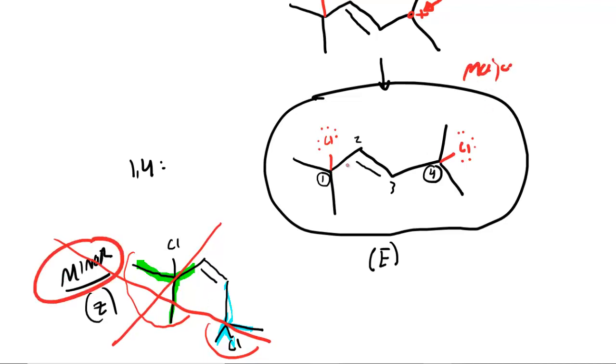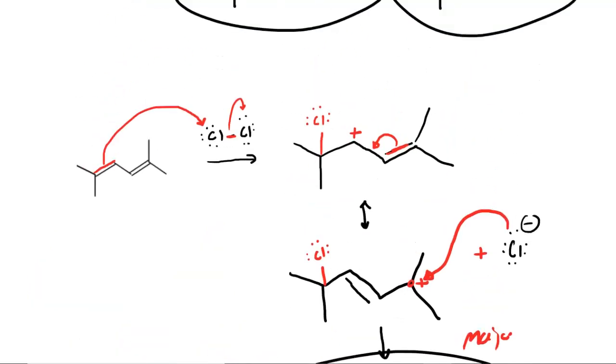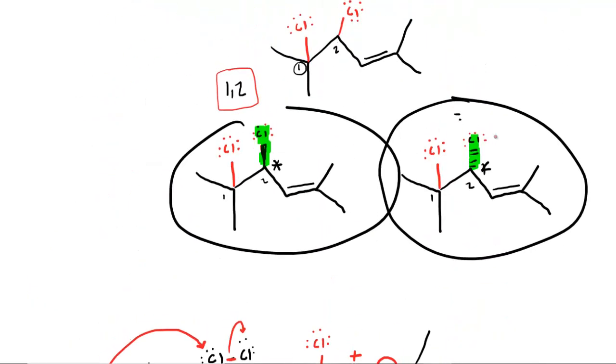In summary, you have one answer for the 1,4 product, and two answers for the 1,2 product to account for both stereoisomers.